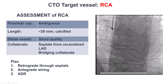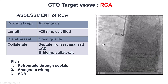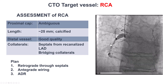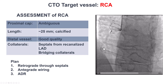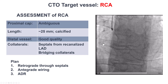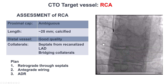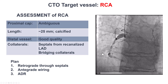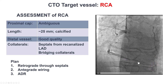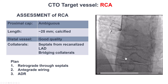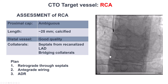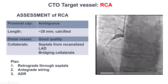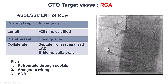The problem with the RCA CTO was proximal cap ambiguity. There are all these bridging collaterals. The length is about 20 to 25 millimeters. There is heavy calcification of the vessel. Although the distal RCA is of good quality, it is hard to know how to approach this antegrade.